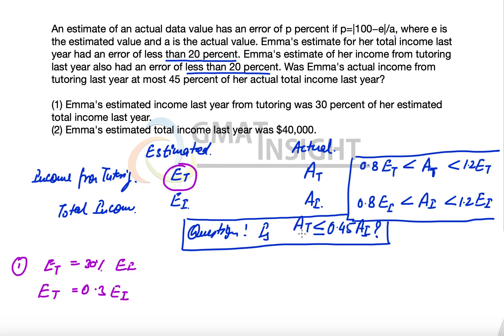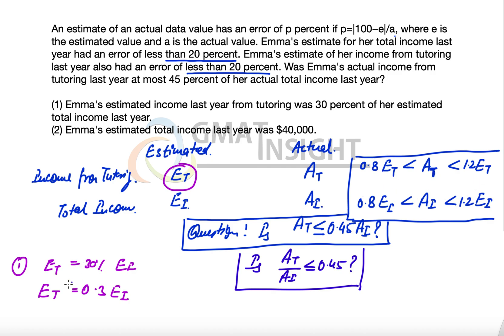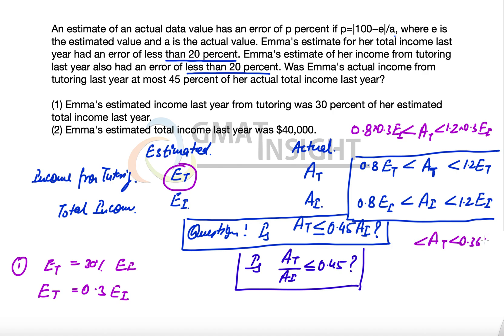We can simplify the question as: is AT over AI less than or equal to 0.45? Since ET equals 0.3 EI, we substitute into the error bounds for AT. The maximum value of AT is 1.2 times 0.3 EI, which equals 0.36 EI. The minimum value of AT is 0.8 times 0.3 EI, which equals 0.24 EI.